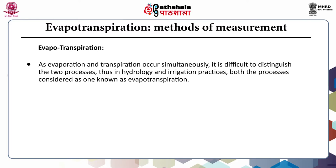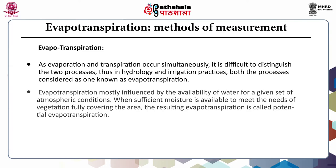As evaporation and transpiration occur simultaneously, it is difficult to distinguish between these two processes. Thus, in hydrology and irrigation practices, both these processes are considered as a single one known as evapotranspiration. Evapotranspiration is mostly influenced by the availability of water for a given set of atmospheric conditions. When sufficient moisture is available to meet the needs of vegetation fully covering the area, the resulting evapotranspiration is called potential evapotranspiration.